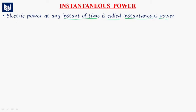The units for instantaneous power are watts only. We will take the instantaneous power as a function of time, P of T. So power at any instant of time is instantaneous power.